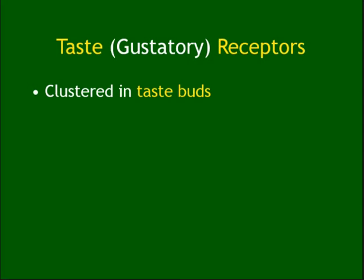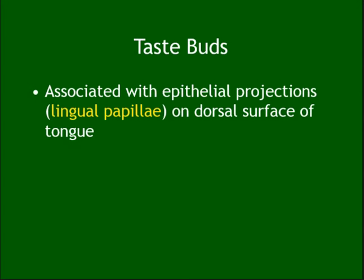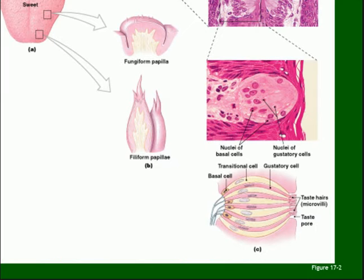For taste — the receptors are in the taste buds, and the taste buds are in the lingual papillae, located on the dorsal surface of the tongue. There are three different types of papillae: fungiform, filiform, and circumvallate.